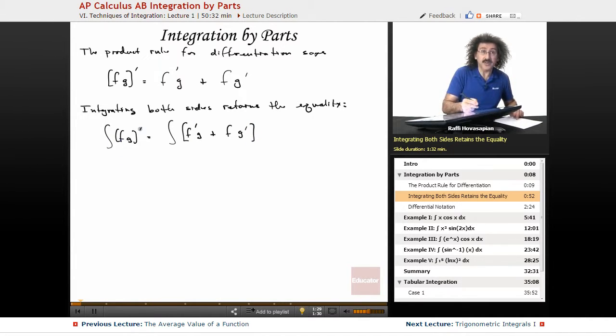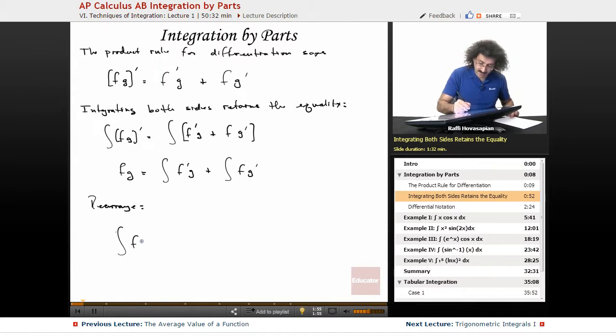Well, the integral of the derivative just goes away. So that becomes f g is equal to, and the integral operator is linear, so I can distribute it out. It becomes the integral of f prime g plus the integral of f g prime. Now I'm going to rearrange to get the following: the integral of f g prime is equal to f g minus the integral of f prime g.